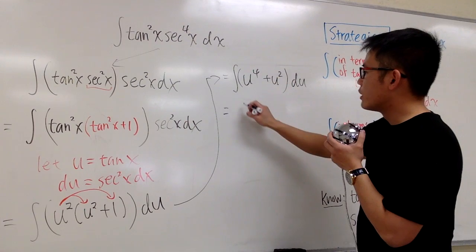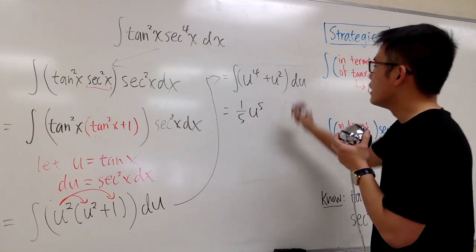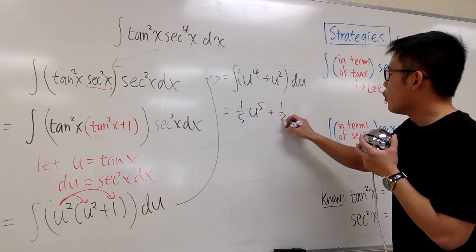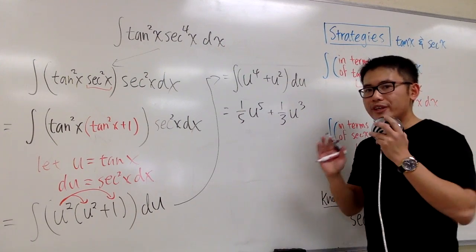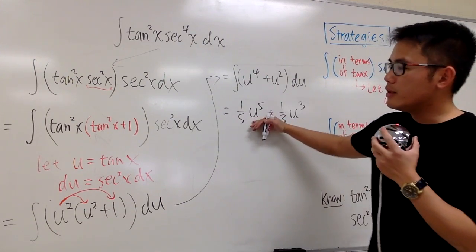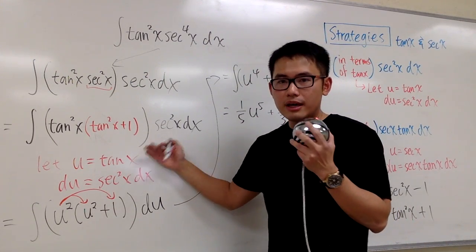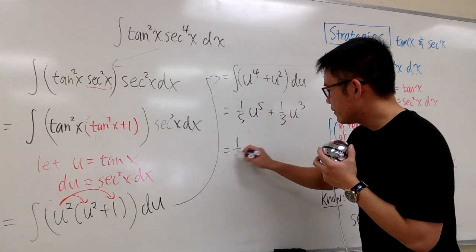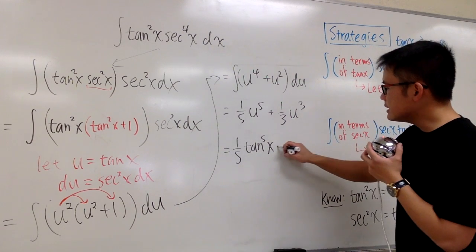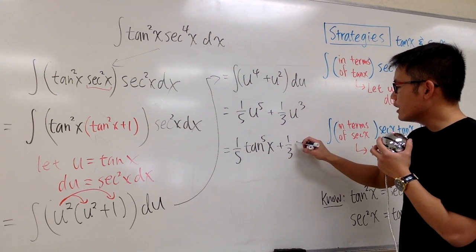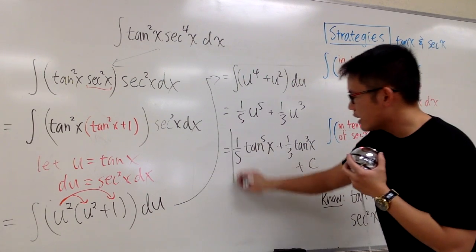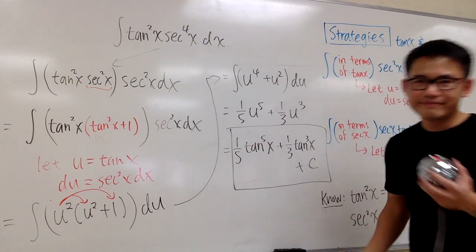Integrating: the integral of u to the fourth power is one-fifth u to the fifth power, and the integral of u squared is one-third u to the third power. Converting back to x, the final answer is one-fifth tangent to the fifth power x plus one-third tangent to the third power x plus C.